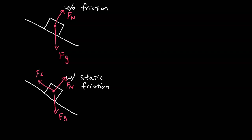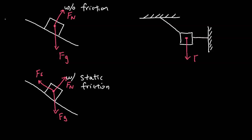Here we have a box connected to two ropes. The first thing we draw is gravity force straight down, and then we draw the tension force. Because there are ropes, the tension force is going to be along the direction of the string.